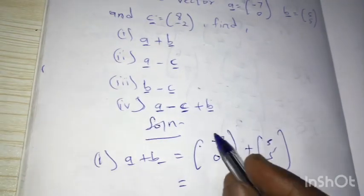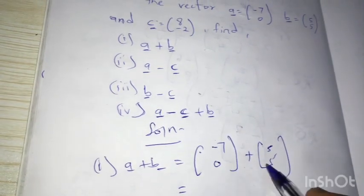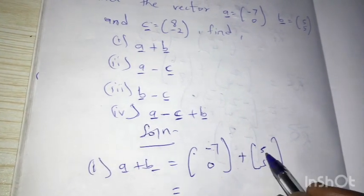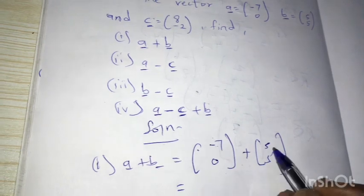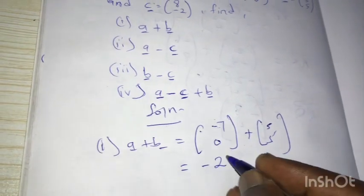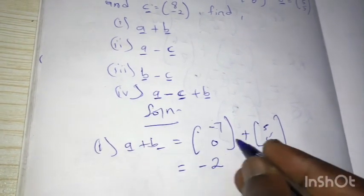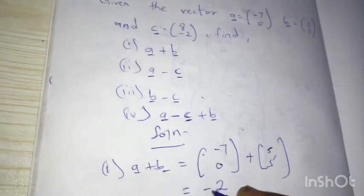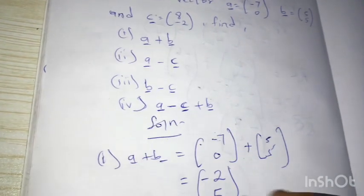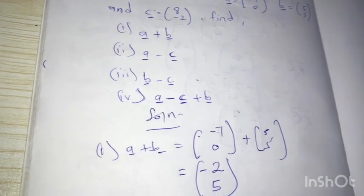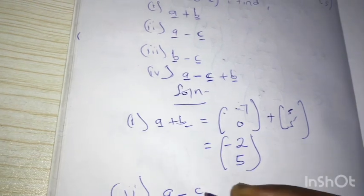This is top plus top, down plus down. So negative seven plus five — if you only have seven and you pay five, you still have negative two. Then zero plus five is five. As simple as that. Second one: a minus c.